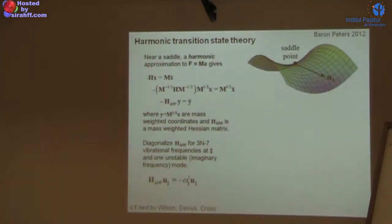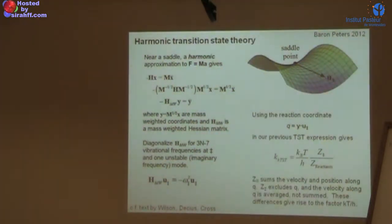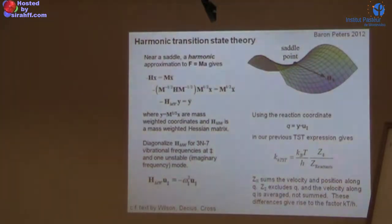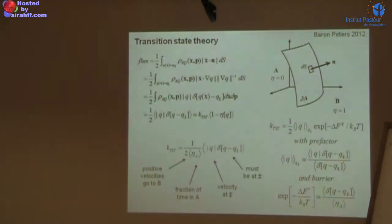Don't do this with a free energy landscape — you'll get things hopelessly wrong. It works beautifully for the potential energy landscape. The unstable mode direction gives a number — a one-dimensional coordinate characterizing how far you've gone along the reaction pathway. Plugging this into the previously derived equations gives the usual harmonic TST expression: kT/h with a ratio of the partition function for the transition state divided by the partition function for the reactants.